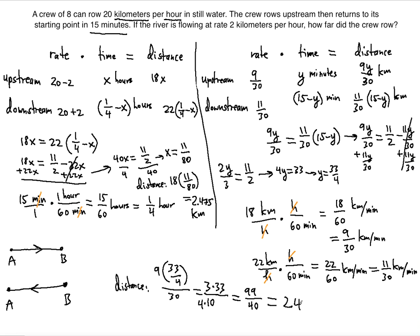We get the same answer of 2.475 kilometers as in the first method. Both types of unit conversions work. As long as you don't mix time units and correctly calculate the upstream and downstream rates, you should have no problem completing this successfully. Thank you for watching — I'll see you in my next video.